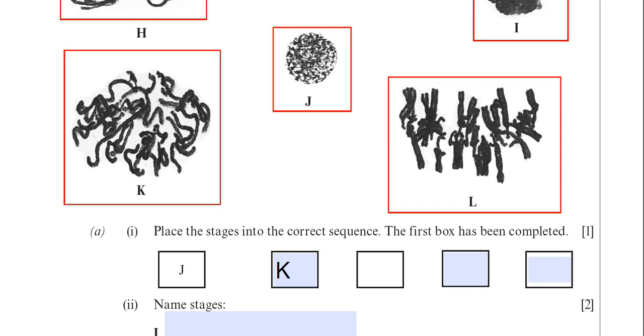After K it would be metaphase. K is prophase of course. So after prophase would be metaphase and that would be image L, where the chromosomes are aligned along the equator. So after metaphase, you would have anaphase.